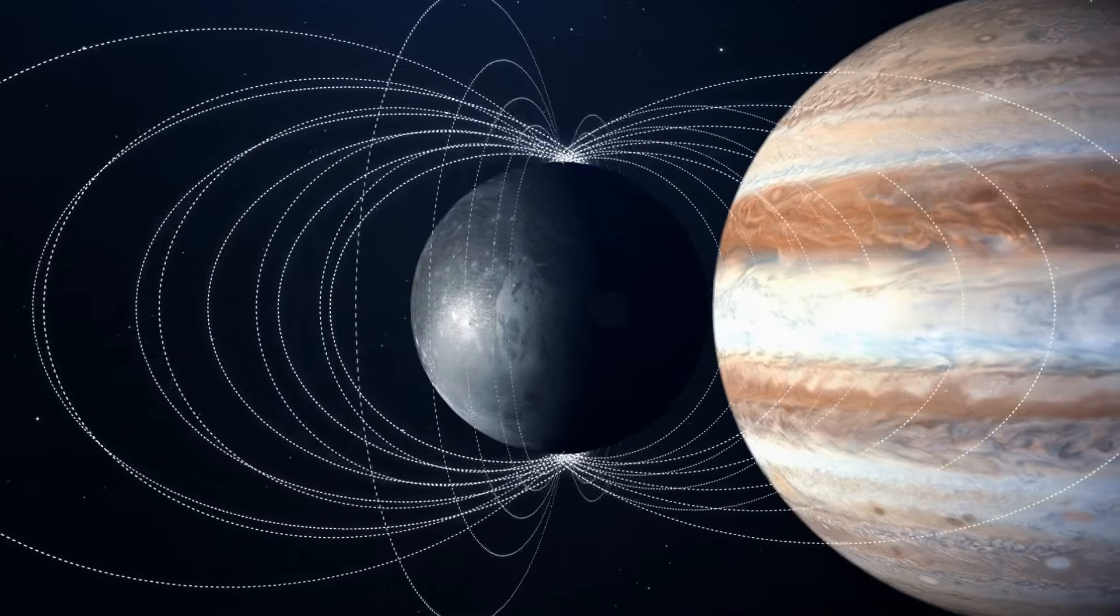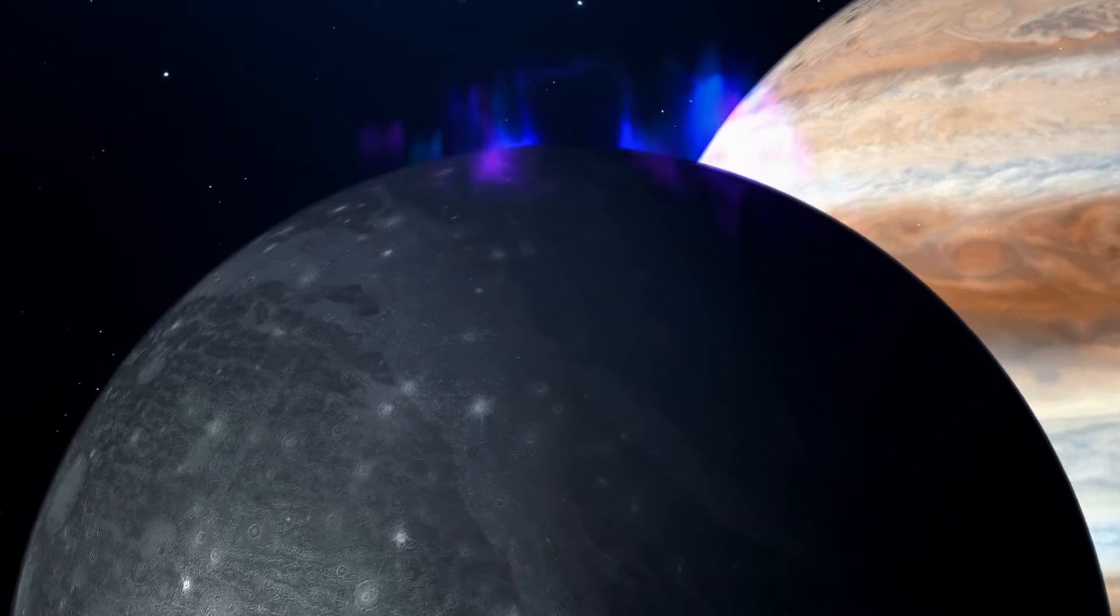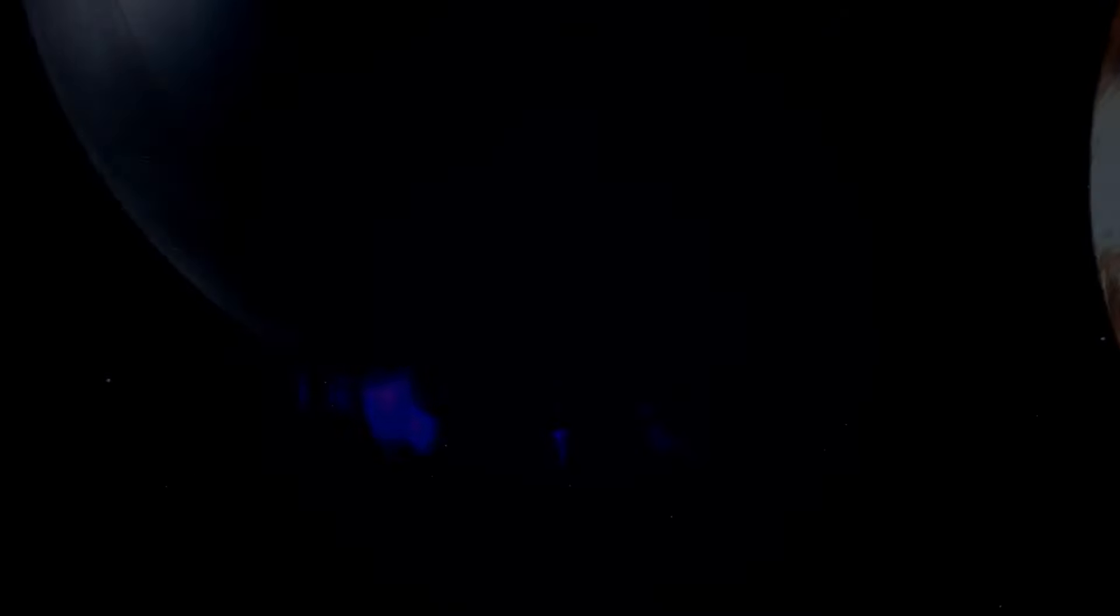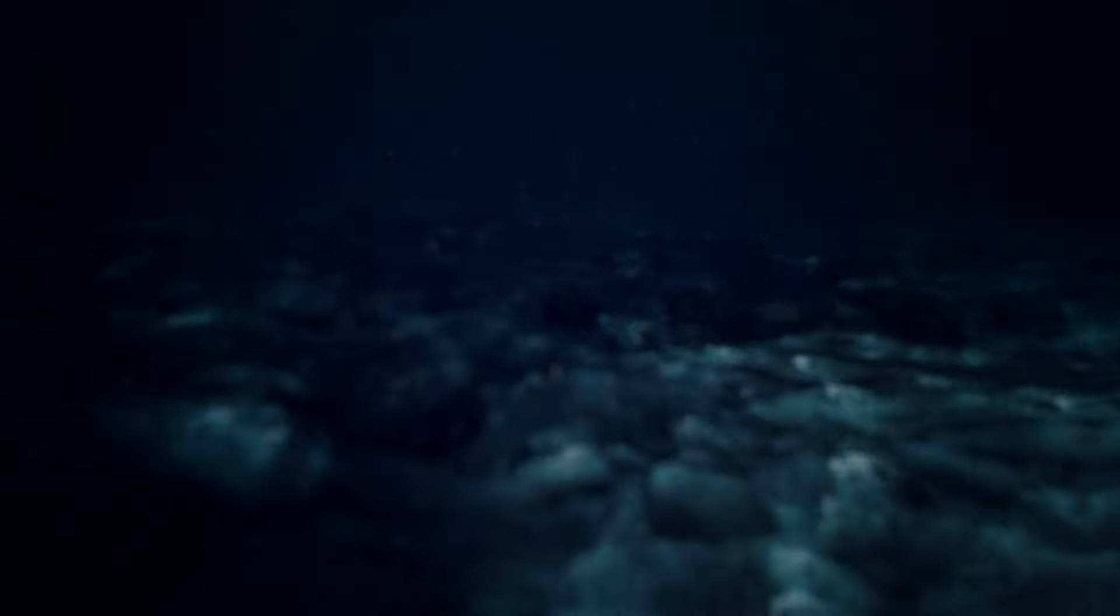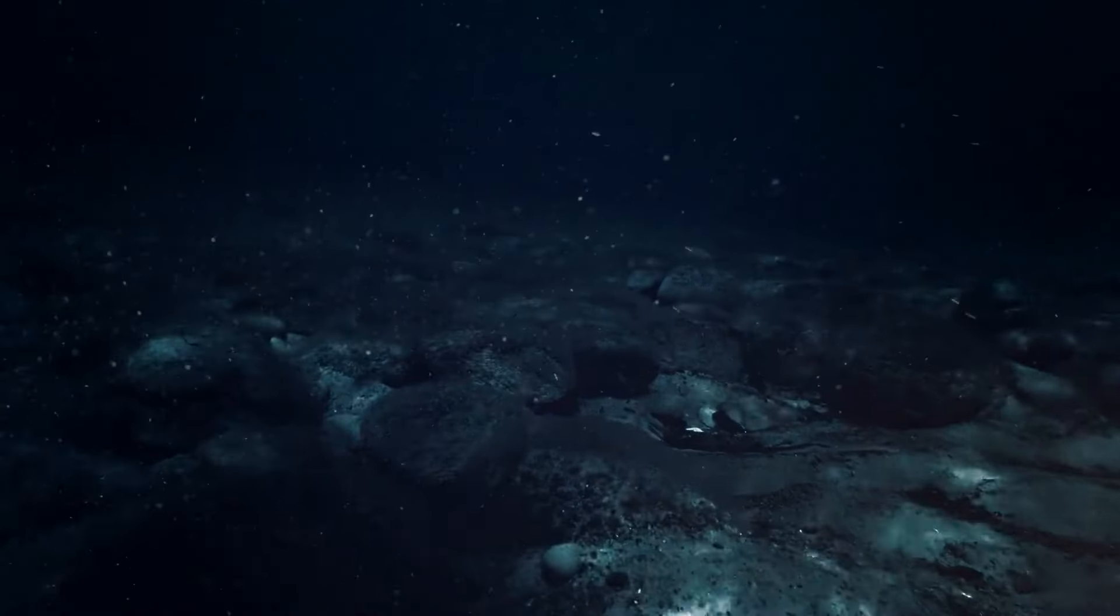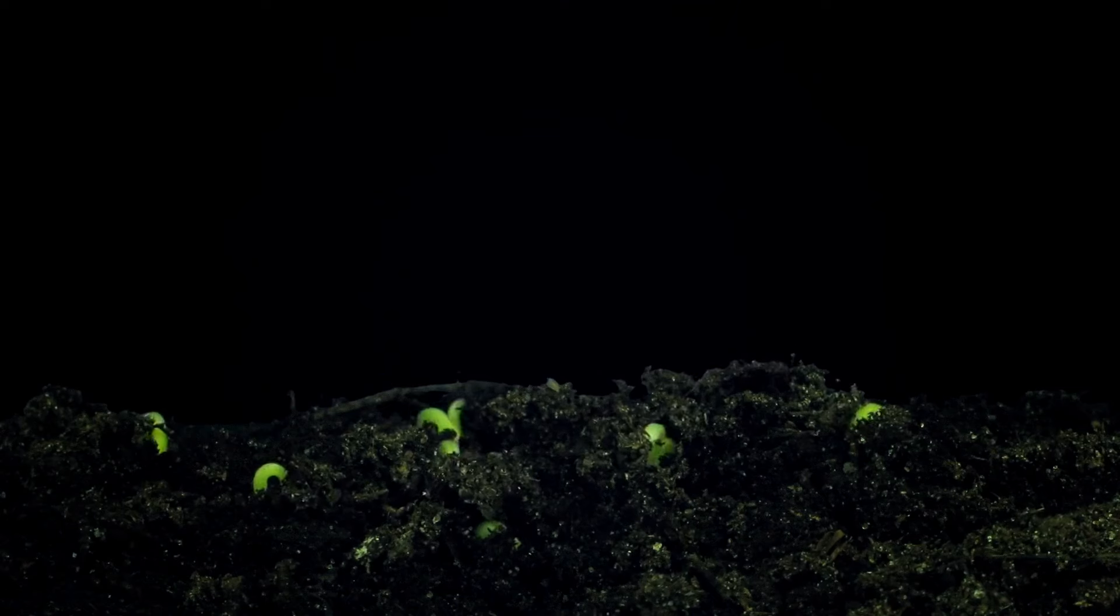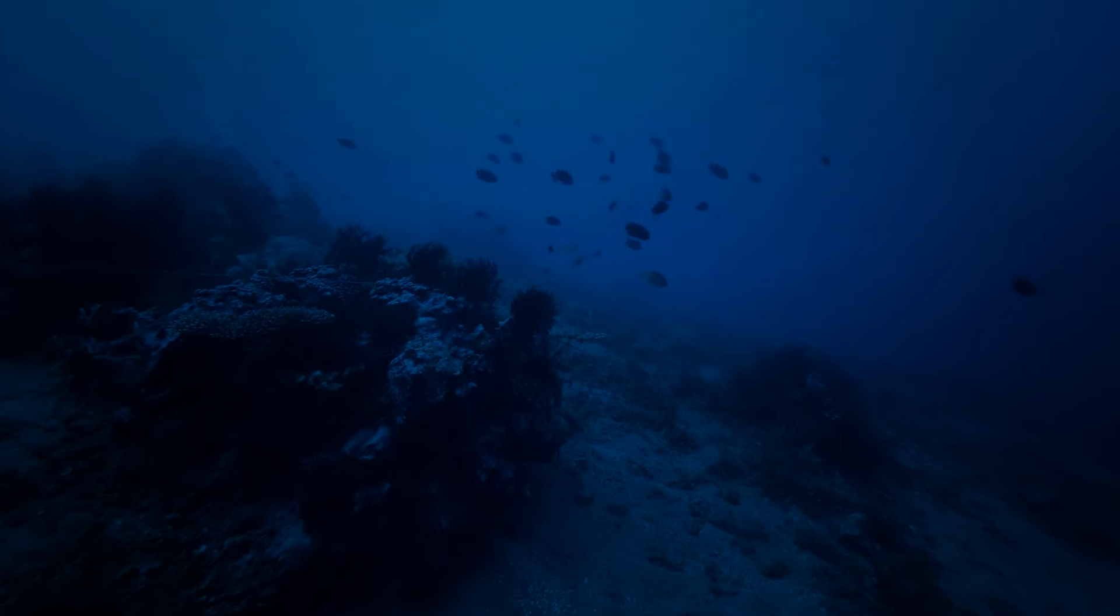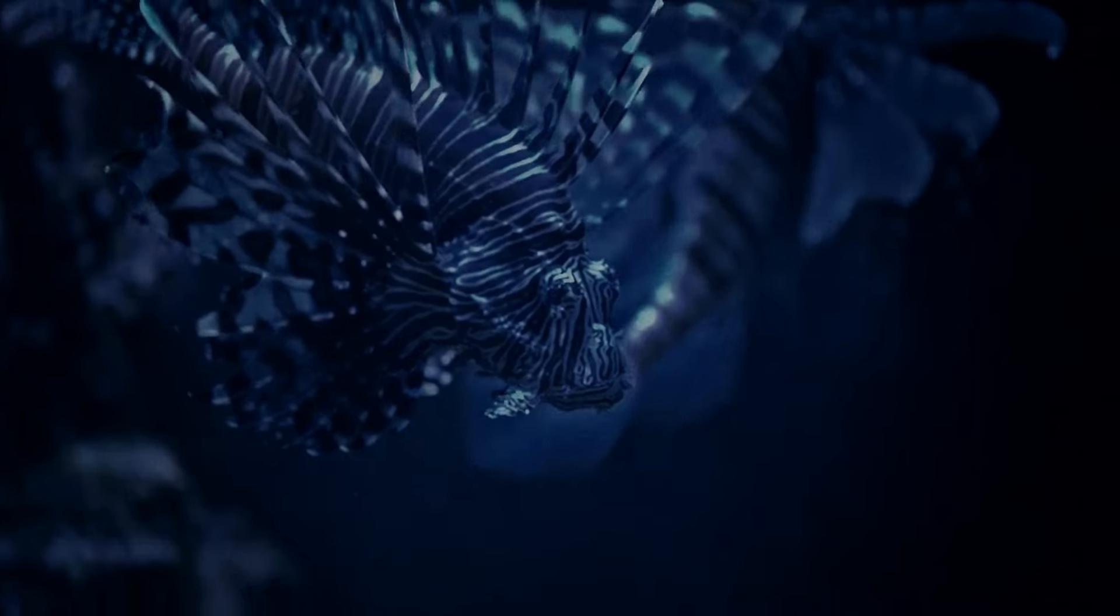Since it has a magnetic field surrounding it, auroras pop up all the time. Those are glowing gas circling the moon's north and south poles. If life existed in such a place, it would probably be at the bottom of Ganymede's extremely salty ocean. For a long time, scientists thought that the sun was a crucial component to kickstart life. But now we know that there are organisms dwelling deep at the bottom of the oceans. Those are doing just fine without sunlight.